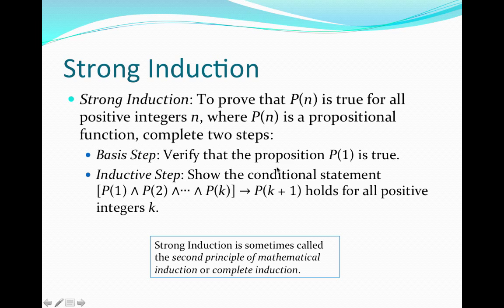Basically, we want to prove the property for the first natural number in which it holds. In most cases, that will be to prove the property for 1. In other cases, it may be to prove it for some positive integer b, which may be greater than or equal to 1. Once we have proven the property for the first natural number it applies to, we apply the inductive step.